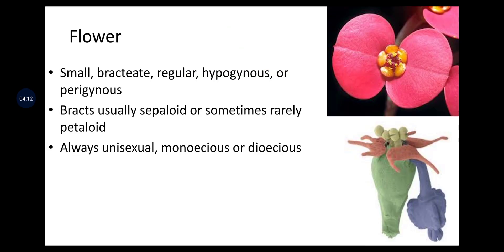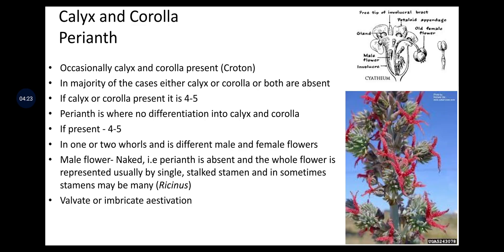Flowers are small, bracteate, regular, hypogynous or perigynous. Bracts are usually sepaloid or sometimes rarely petaloid. Flowers are always unisexual — monoecious or dioecious. Regarding corolla: occasionally calyx and corolla are present, e.g., in Croton. In the majority of cases, either calyx or corolla or both are absent. If calyx and corolla are present, they are 4 to 5 in number. Perianth, where there is no differentiation into calyx and corolla, is present in 4 to 5 whorls. Male flowers are naked — perianth absent — and the whole flower is usually represented by a single stalked stamen. In some cases, stamens may be many, like in Ricinus (castor). Estivation is valvate or imbricate.